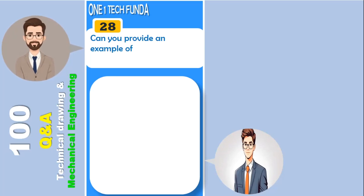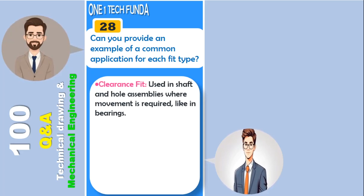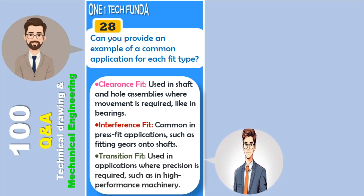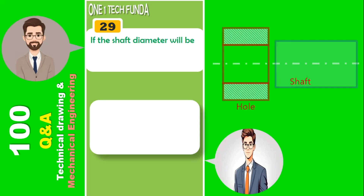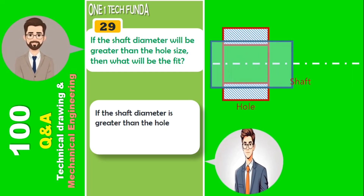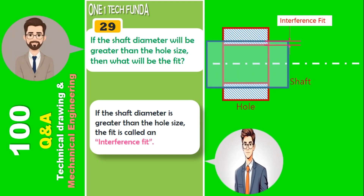Can you provide an example of a common application for each fit type? Clearance fit: used in shaft and hole assemblies where movement is required, like in bearings. Interference fit: common in press fit applications, such as fitting gears onto shafts. Transition fit: used in applications where precision is required, such as in high-performance machinery. If the shaft diameter is greater than the hole size, the fit is called an interference fit.